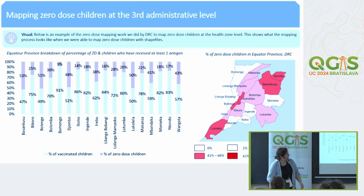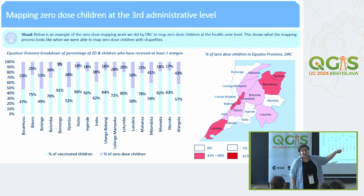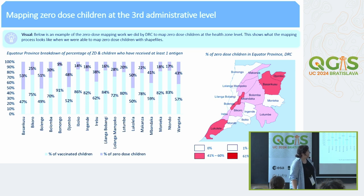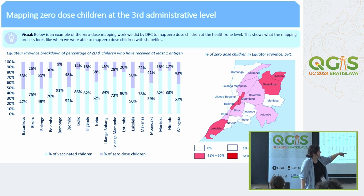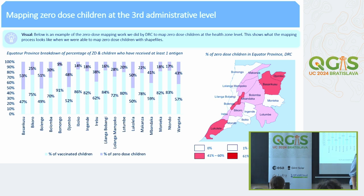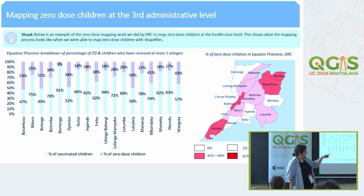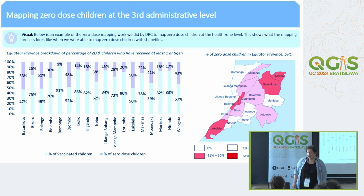For the other three countries at the third administrative level, we were able to use boundaries. Here we can see Equator Province in DRC, with some clustering of high rates of zero-dose children in the south part of the province along the border, in the center, and along the northeast quadrant.